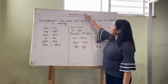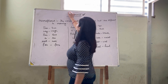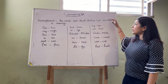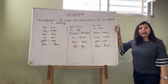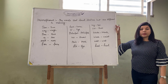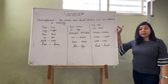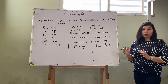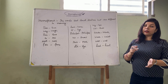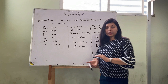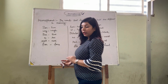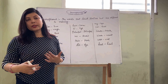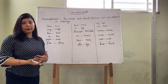What is Homophones? Homophones ka matlab hota hai aise words, jis ki meaning alag ho, lekin sound ek jaisa kare. We come across so many words in our day-to-day life.